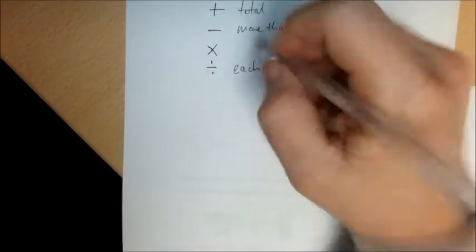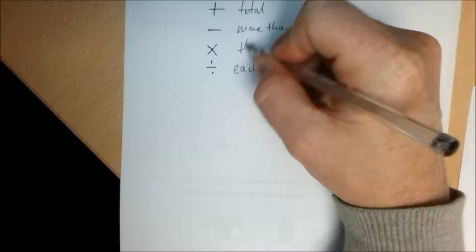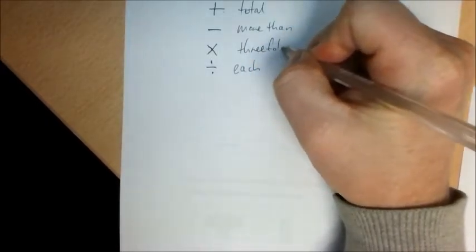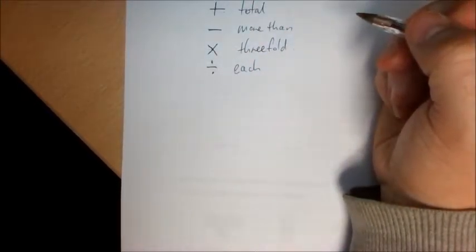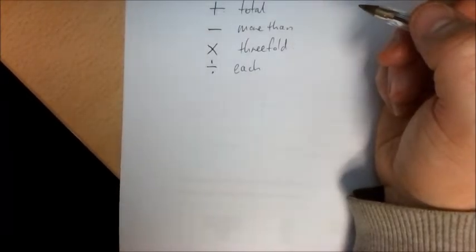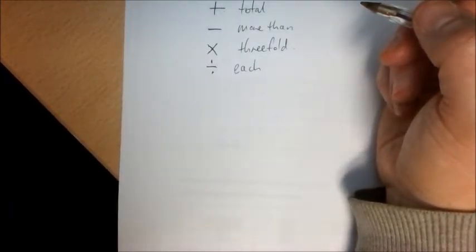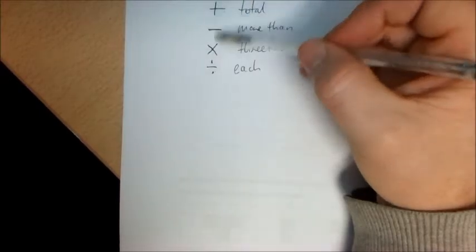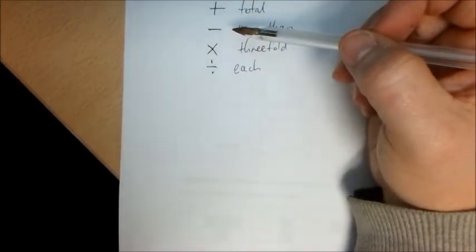Often multiplication is indicated by words like 'threefold.' If I say there was a threefold increase in something, it means it's now three times more than it was.